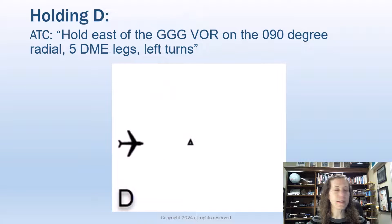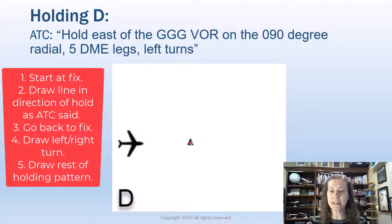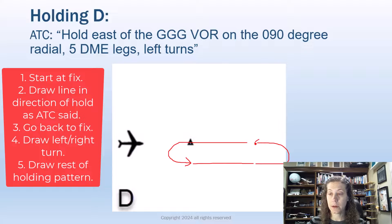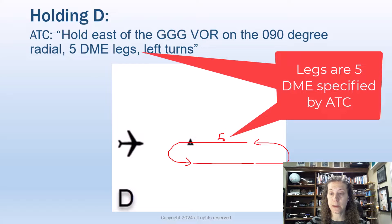All right, one more example for us to try today with left turns. So follow along. Here we have a holding pattern that says hold east. So I'm going to start by drawing a line to the east on the Gregg County VOR on 090 radial, 5 DME legs, left turns. So I'm going to draw my line holding east. I'm supposed to make left turn, so I go to the VOR and make a left turn. Draw the rest of my pattern, and I am going to label these legs 5 DME. I also want to point out one other thing.